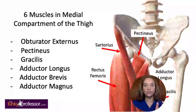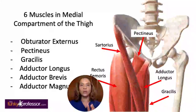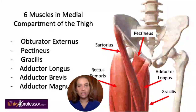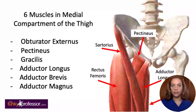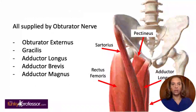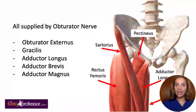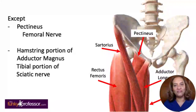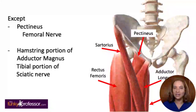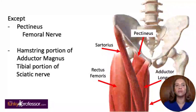There are six muscles in the medial compartment of the thigh: obturator externus, pectineus (which forms part of the floor of the femoral triangle), gracilis, adductor longus, adductor brevis, and adductor magnus. All muscles in the medial compartment are supplied by the obturator nerve except pectineus, which is supplied by the femoral nerve. Adductor magnus is unique — its adductor component is supplied by the obturator nerve, but its hamstring component is supplied by the tibial portion of the sciatic nerve.